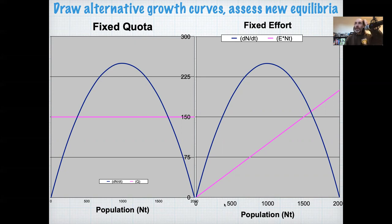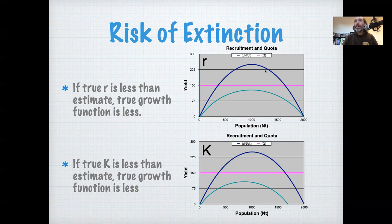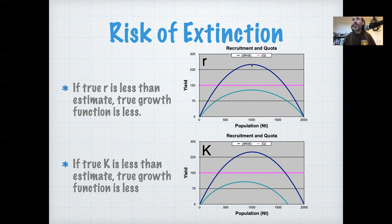Let's focus first on the fixed quota system. We have our fixed quota and original growth curve. If we've overestimated R so the true R is lower than expected, that doesn't change K the carrying capacity — so those two equilibria are still there — but reduction in R reduces the growth rate and reduces the height of the growth curve. R controls the height of this curve but doesn't affect the point K. If you've overestimated R, you can push this system from one with two stable equilibria to one with only one equilibrium, which is extinction. For all values of initial conditions, population declines because the growth rate is always lower than the harvest rate.